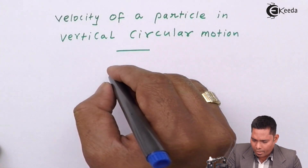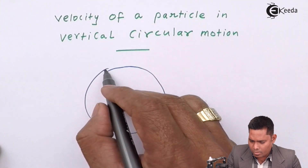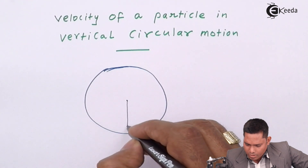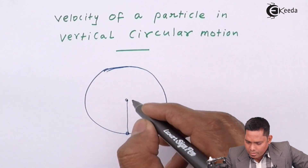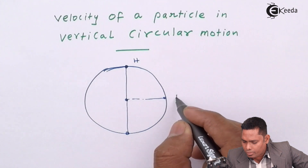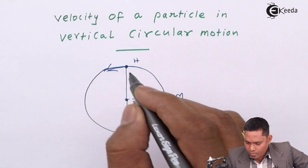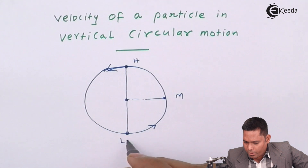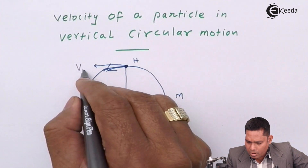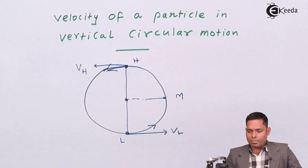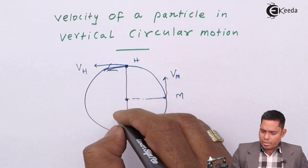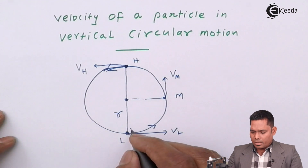Consider a circle with a particle at the lowest point, the highest point, and the midpoint of its motion. The velocity at the lowest point is VL, at the highest point is VH, and at the midpoint is Vm. The radius of the circle is R and the mass of the object is M.